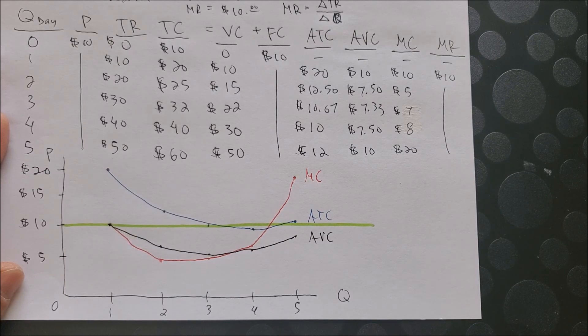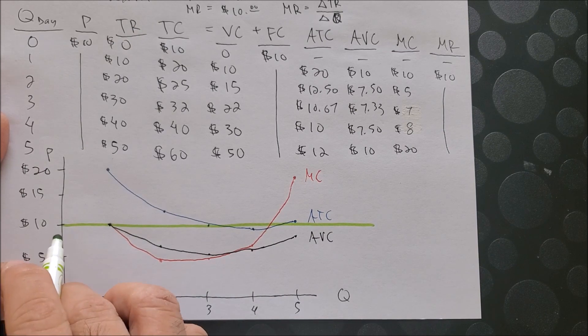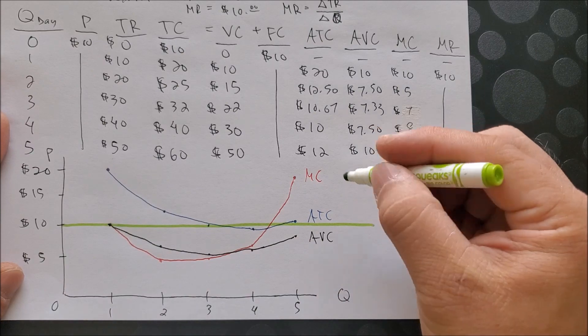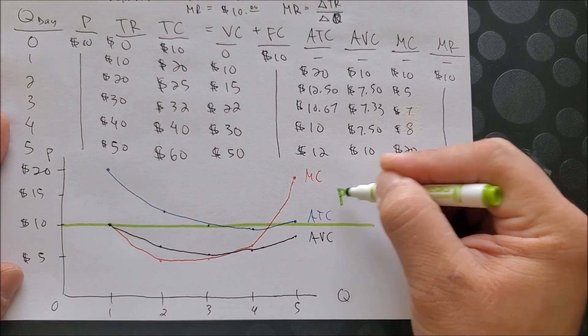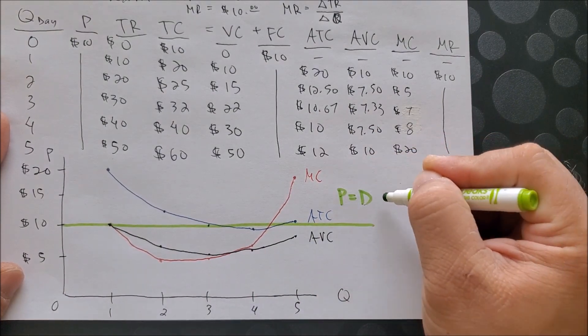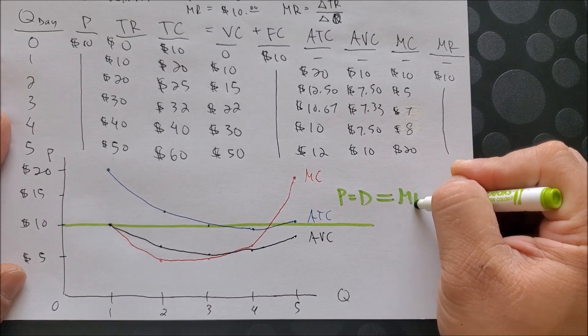The newest curve that we have drawn is that of the MR. And just to illustrate, it is a horizontal line in green. We can put here that price, which is also the demand curve, is equal to the marginal revenue.